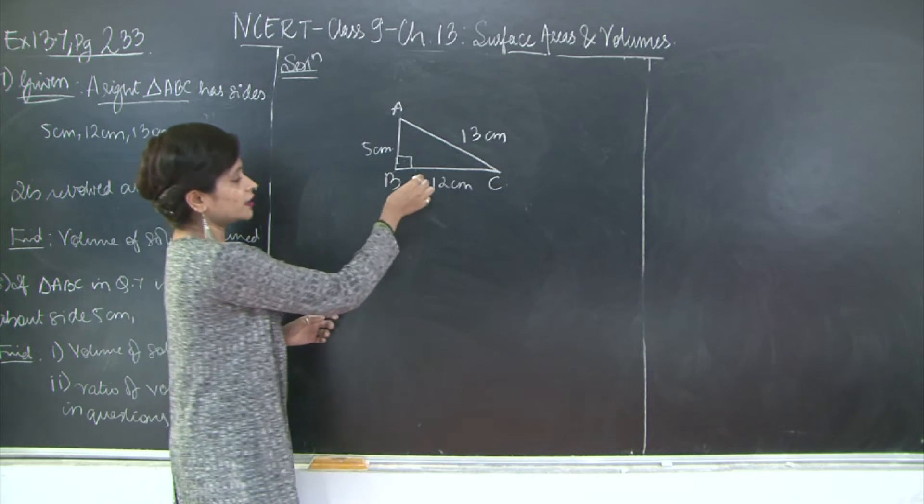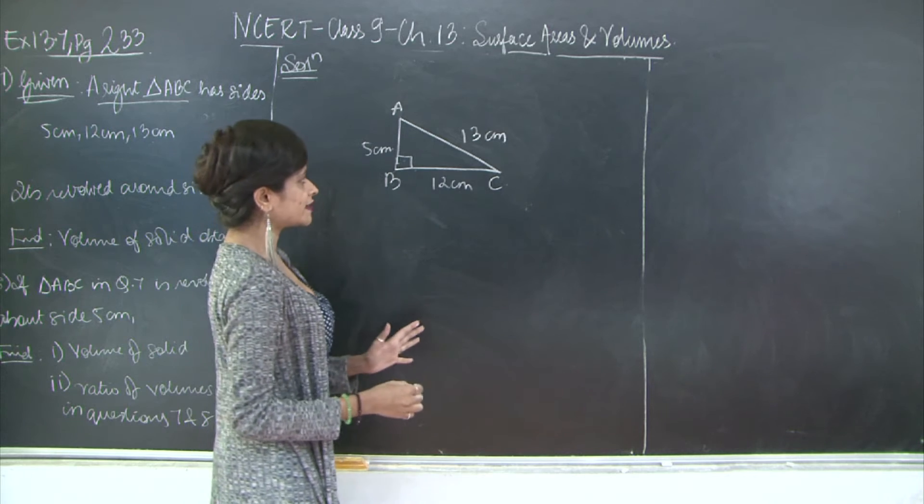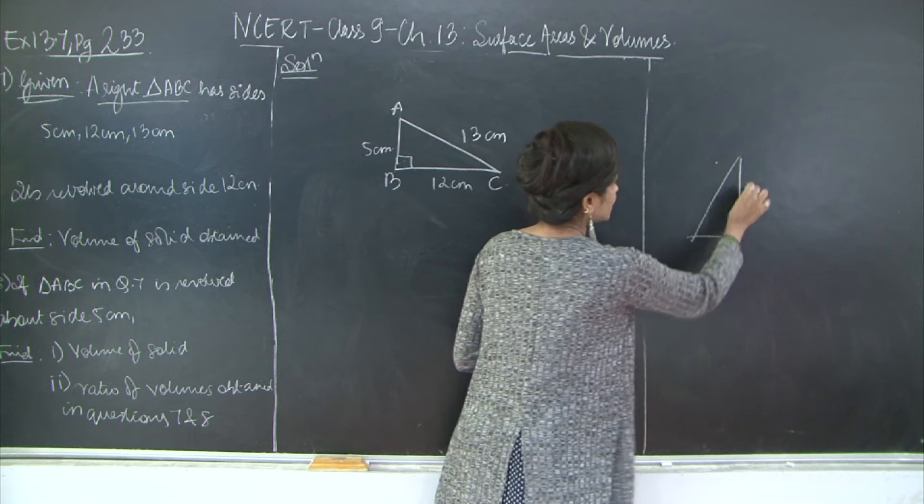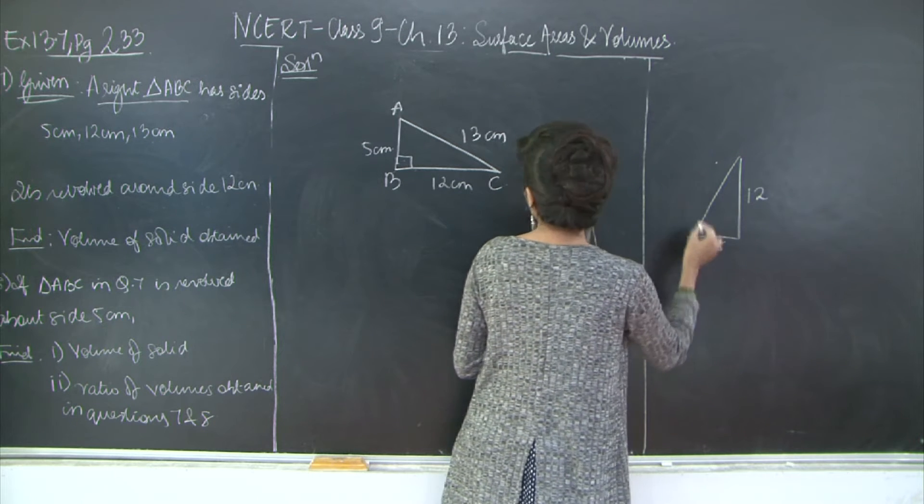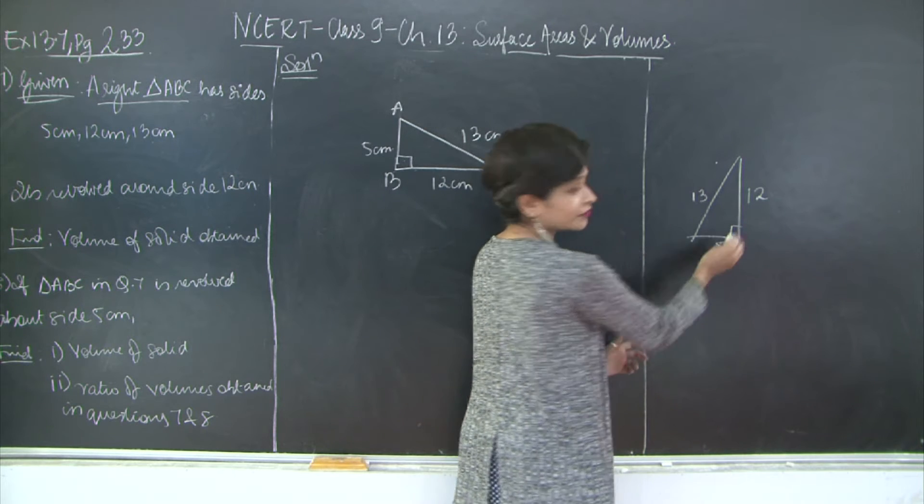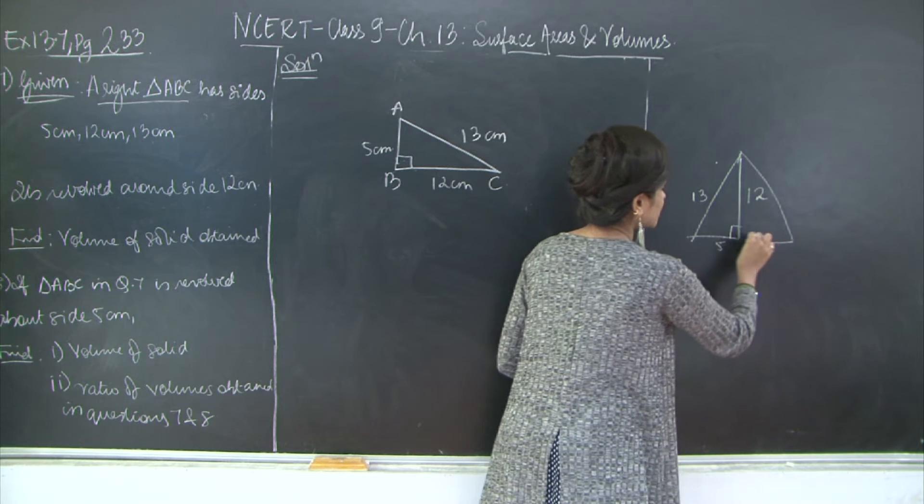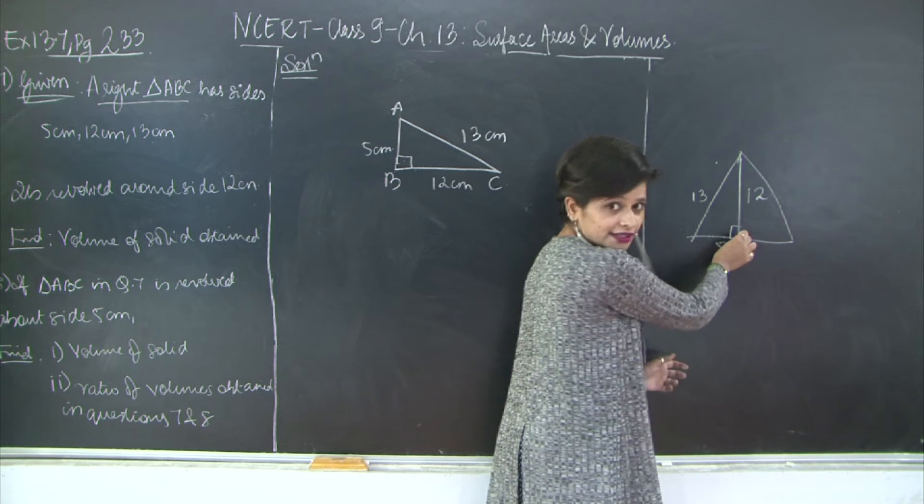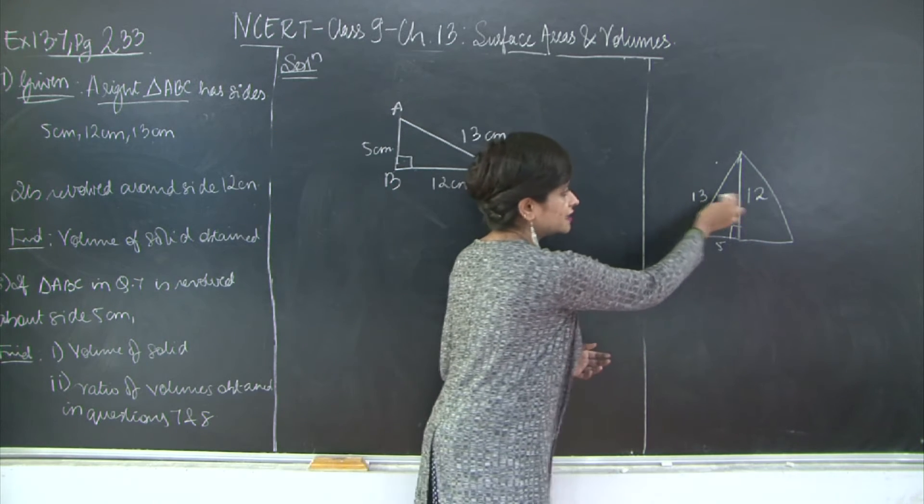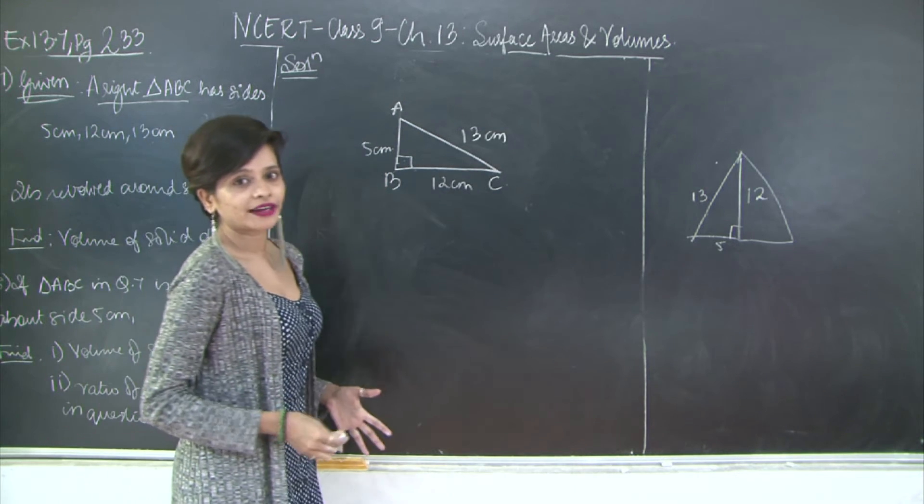Now when they say that it's being revolved around the 12cm, let's say I just tilt this triangle. This becomes 12, this becomes 5 and this becomes 13. So when you tilt it around this side, what happens is you get a right circular cone. So right circular cone will look something like this. So 5 becomes the radius, 13 becomes the hypotenuse and 12 becomes the perpendicular height. This is the sloping height, this is the perpendicular height and this is the radius. Simple. Now what we need to do is we need to go ahead and find the volume.